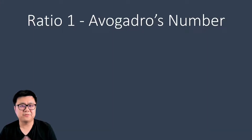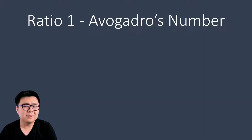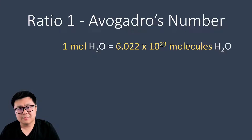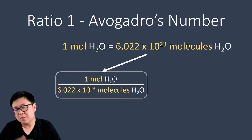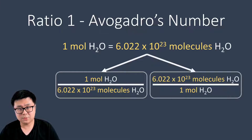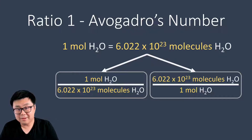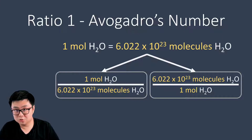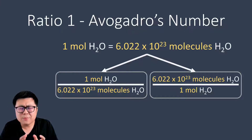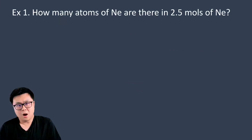The very first ratio is Avogadro's number. One mole of water is equivalent to 6.022 times 10 to the power of 23 molecules of water, so we can set them up as a ratio: one mole of water on top equals 6.022 × 10²³ molecules of water, or we can flip it the other way. You never have to make a choice — depending on what you don't want and what you want, you will naturally put the right thing on top and bottom to cross things out.